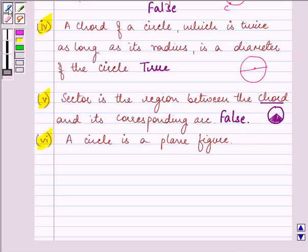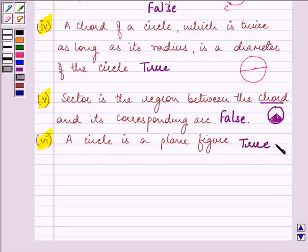The sixth statement says a circle is a plane figure. And this is a true statement.